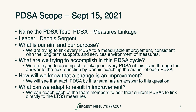For an example, we've outlined the scope of a Plan-Do-Study-Act cycle for this particular change. We've named it the PDSA measures linkage. What is our aim and purpose? We're trying to link every PDSA to a measurable improvement consistent with a long-term supports and services environment of measures that we've attached as an example. What are we trying to accomplish in this cycle? We're trying to accomplish the linkage in every PDSA by coaching the author of every PDSA.